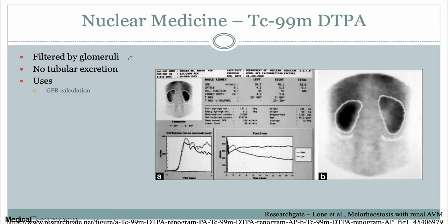Our next example is the DTPA exam, which is a filtered agent. This is what we use for GFR calculation — if you want to evaluate GFR and get a more concrete number, this is the exam you'll be using. We place a region of interest over the kidneys and calculate GFR based on how much radiotracer is in the kidneys at each varying time point.